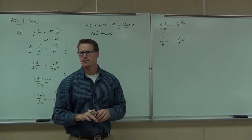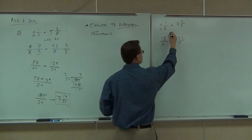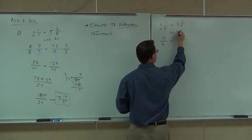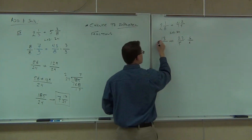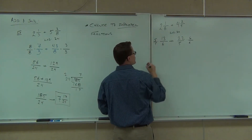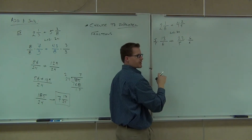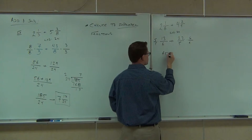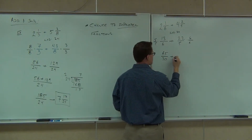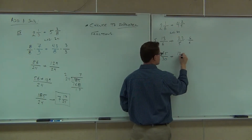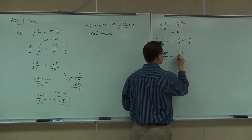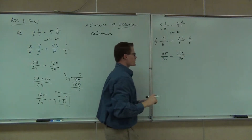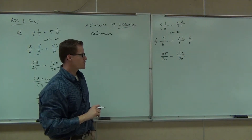So far, so good? We find an LCD. What is your LCD in this case? Multiply 6 over 6 and 5 over 5. You're going to get — what's 13 times 5? 65. And 32? You said 32, right? Yes. So we have 165 over 30 plus 132 over 30.